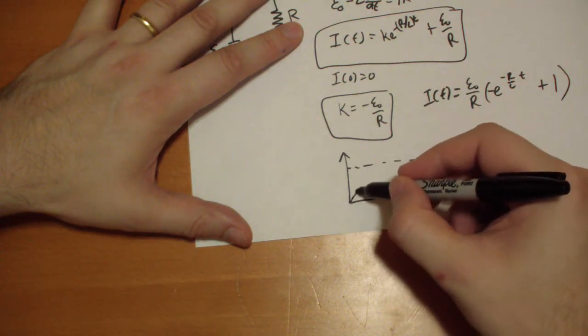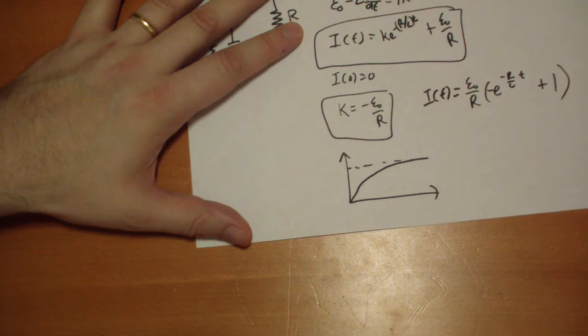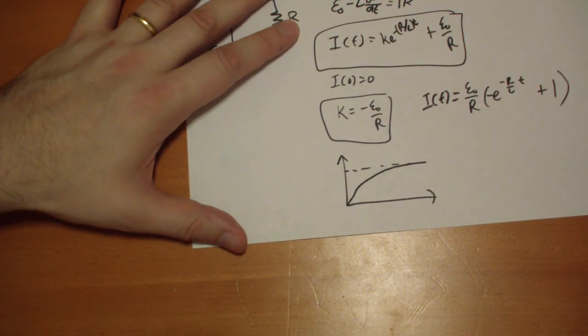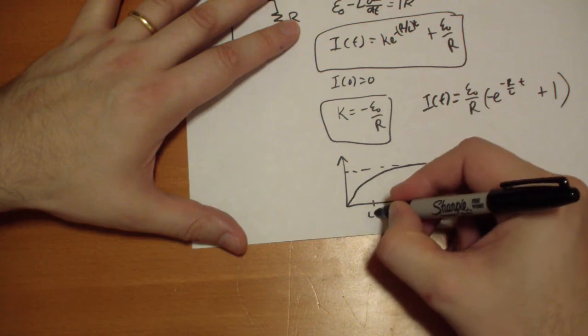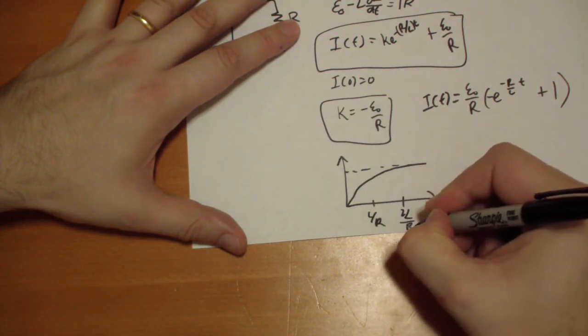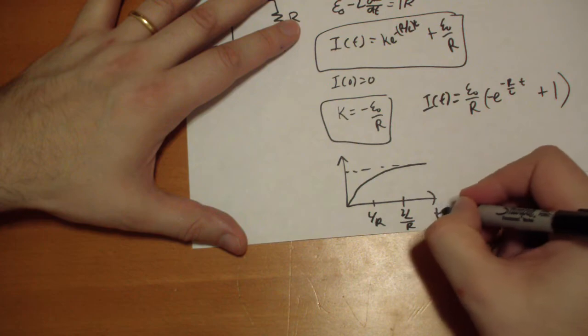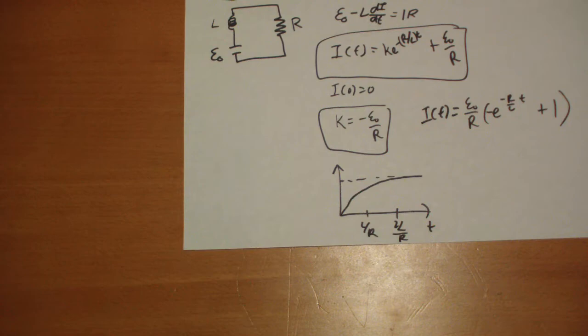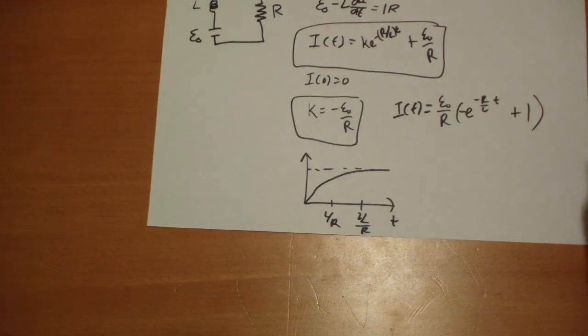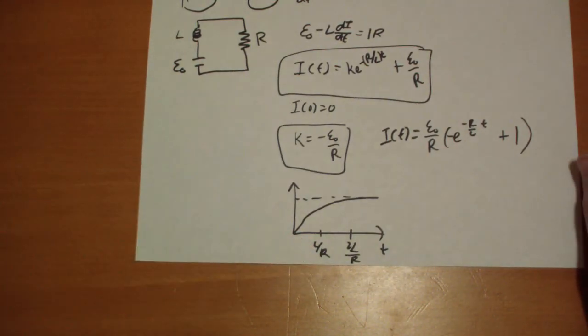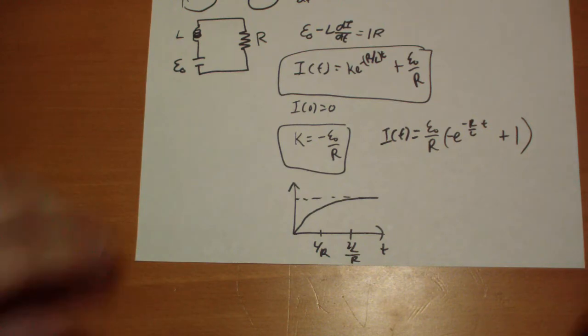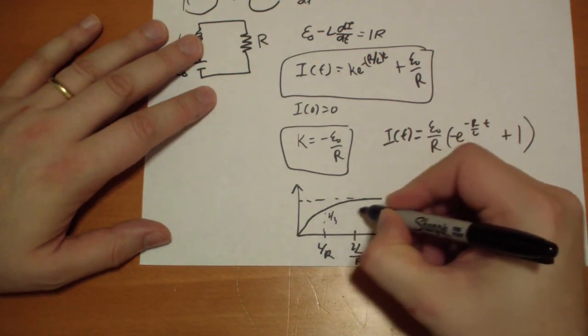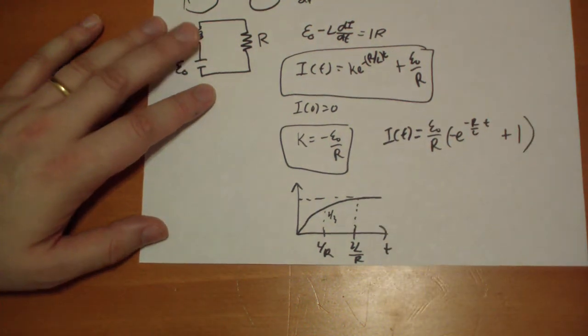Over here is kind of the maximum, and it will just build up over time and approach that maximum. By the time 2L over R time has passed, you are pretty much closer to the maximum there. Every circuit has this self-inductance. And L over R, this is called the time constant. It will tell you basically how fast this thing will take to charge up. So, this one is about two-thirds, and this one is like really close to being the maximum.